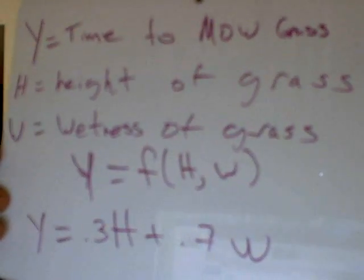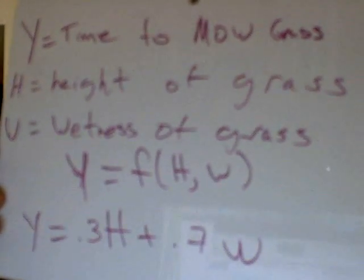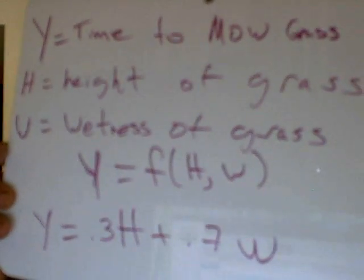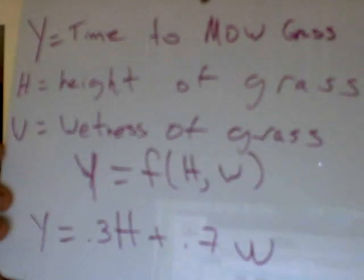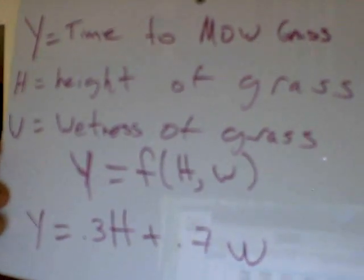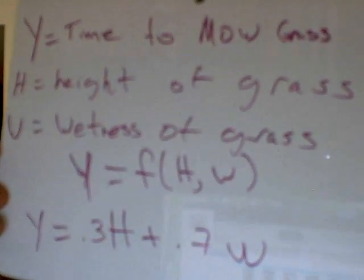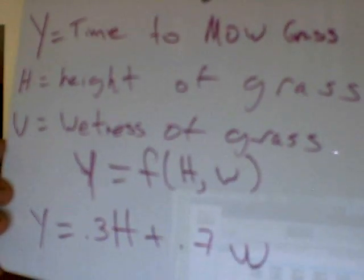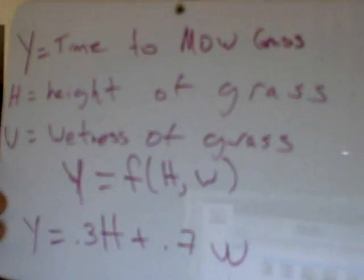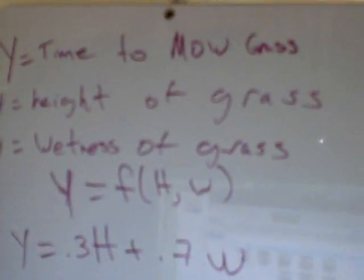Most likely you can't, but you could try some measurements. Height I could measure, but wetness — moisture content — is very difficult to measure. But let's pretend we have a simple formula: y = 0.3h + 0.7w. This says the amount of time to mow the grass is calculable if you tell me the height and the wetness. So if h = 10 inches and w = 20, I take 0.3 times 10 plus 0.7 times 20, and that tells me how long in minutes. It's a fantasy — the function is not really that simple.